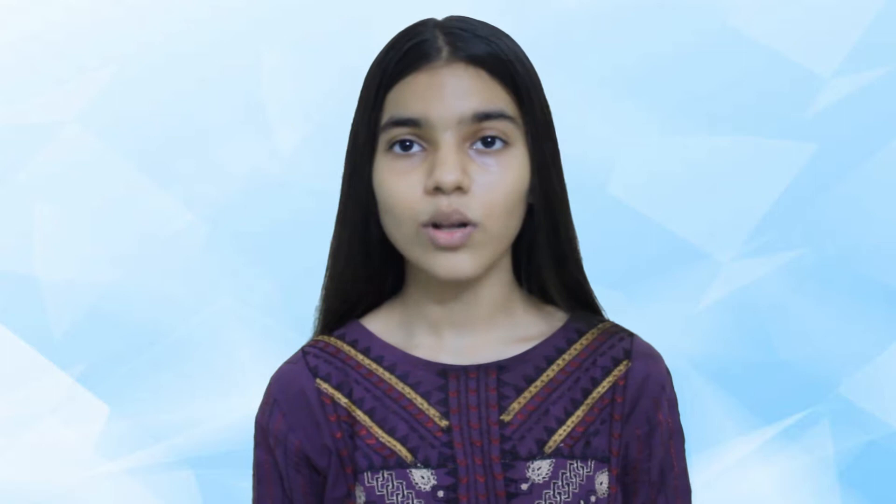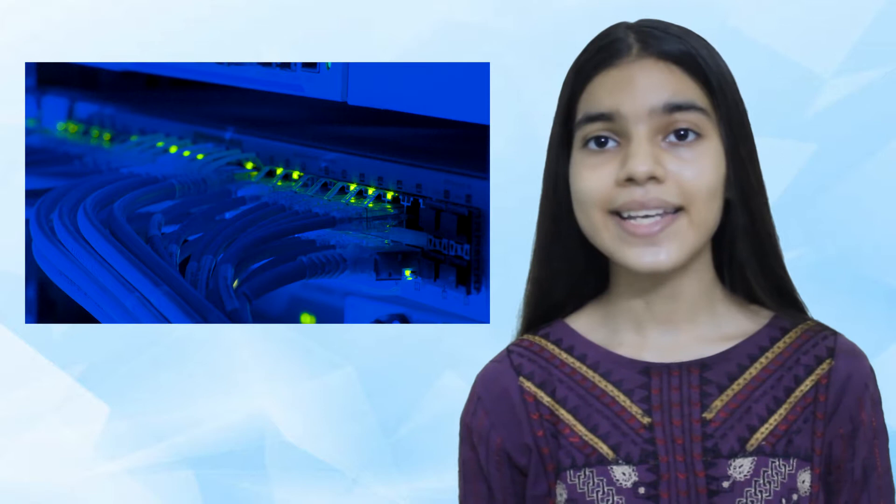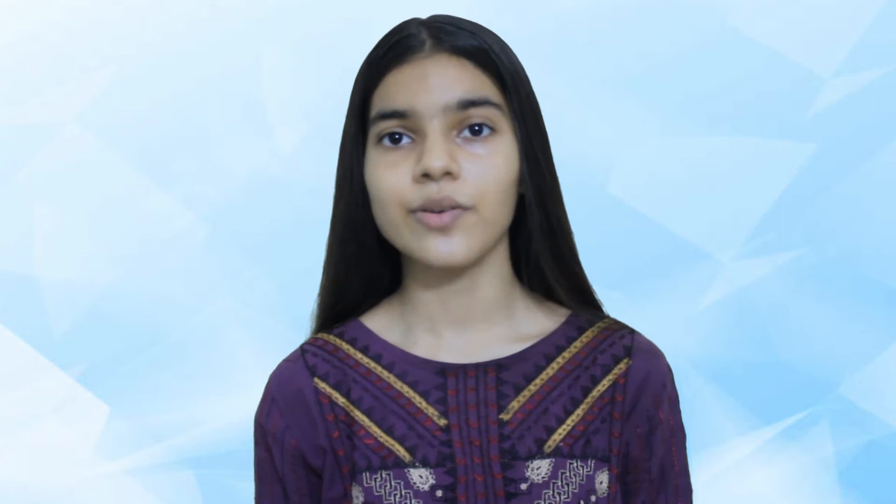Some cloud storage systems are small operations, while others are so large that the physical equipment can fill up an entire warehouse. The facilities that house cloud storage systems are called data centers. At its most basic level, a cloud storage system needs just one data server connected to the internet. A client, such as a computer user subscribing to a cloud storage service, sends copies of files over the internet to the data server, which then records the information.